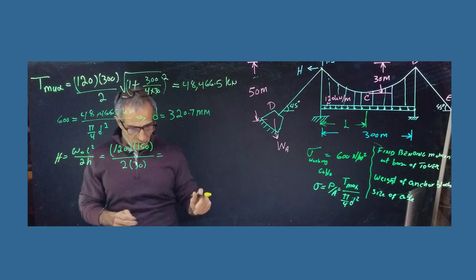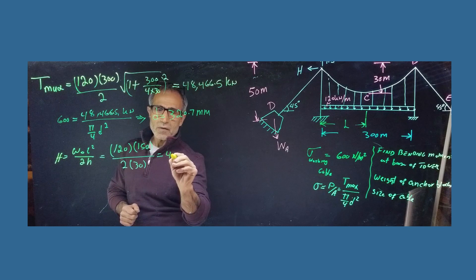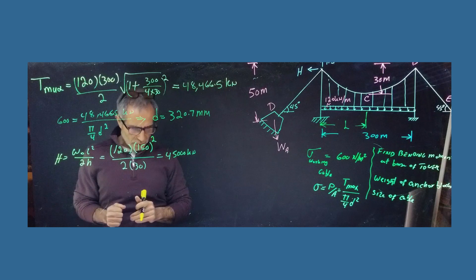And 2 times H. H is given as 30 meter. 2 times 30 meter. And what do I have is, 45,000. 45,000 kilonewton. Got that. So that come out to 45,000 kilonewton.